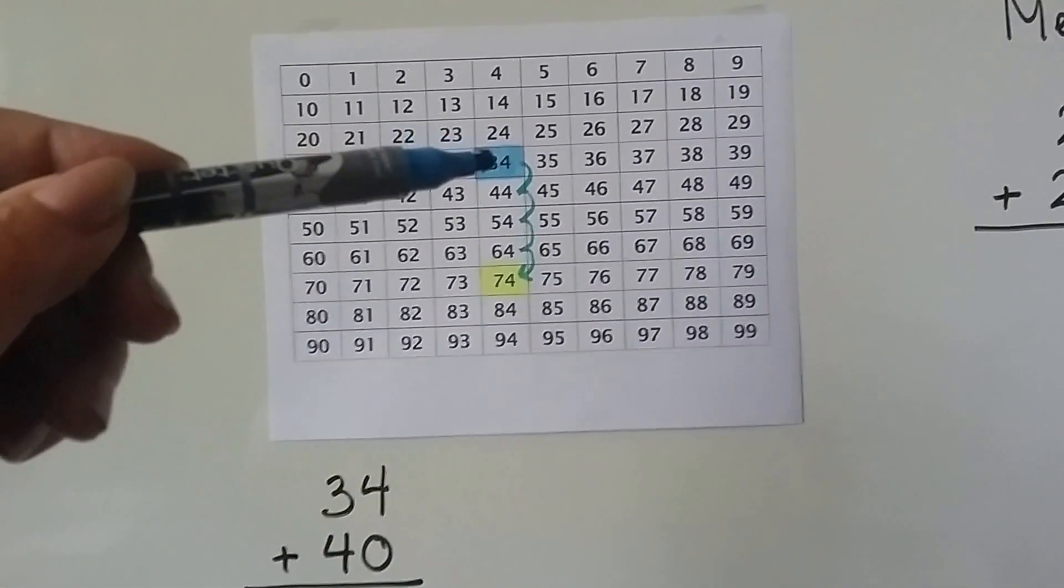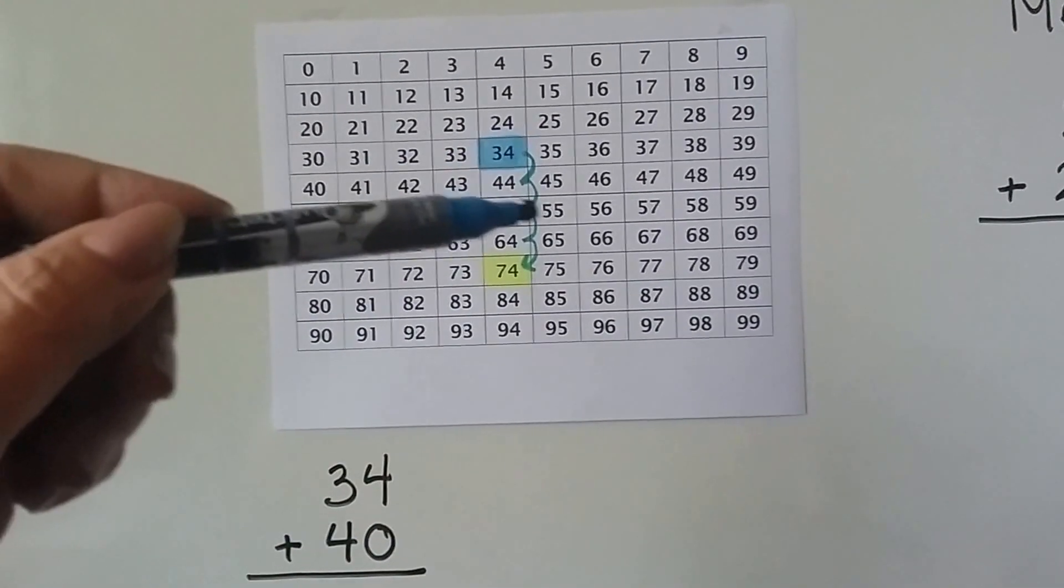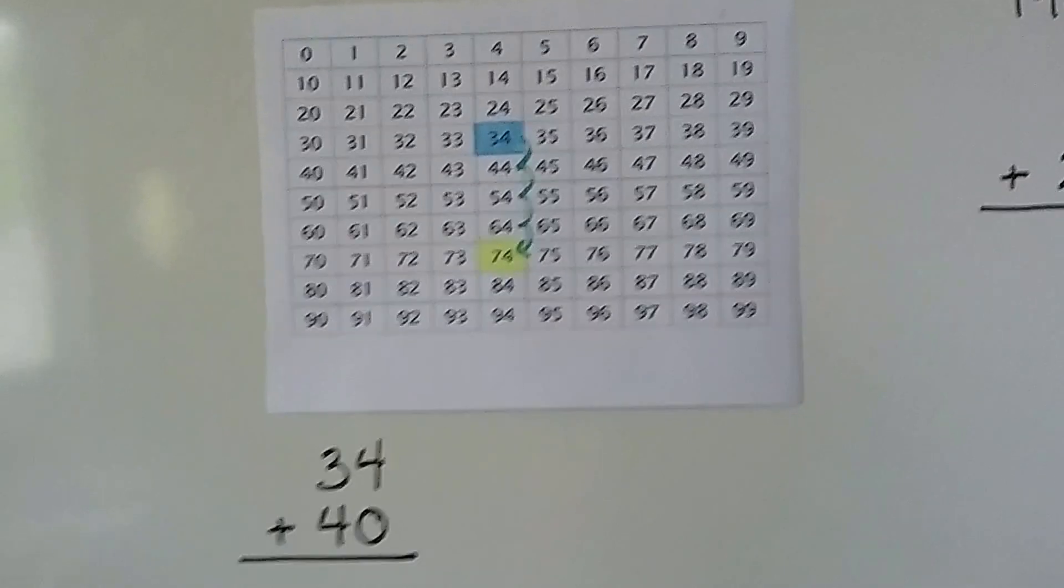we can start at the 34 and just jump down 4 rows for 4 tens, and that'll bring us to a 74. See?